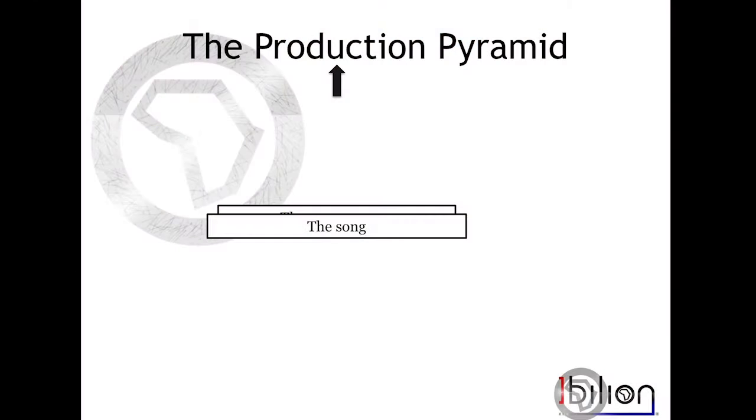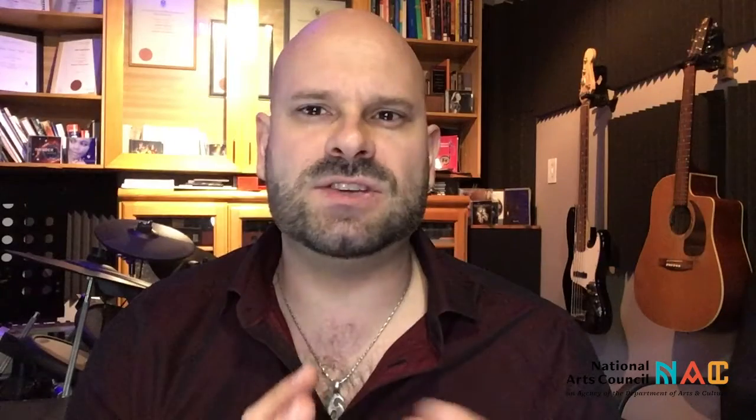From the song, the next component in our pyramid is the arrangement. The arrangement is the music set for all the instruments for the song. While the song itself may be just melody, lyrics, and a skeleton idea, the arrangement is the piano part, synthesized parts, drums, bass, guitar — any of the instruments that need to be played along with or make up the feeling of the song.